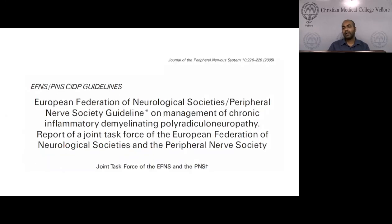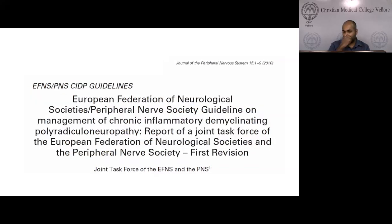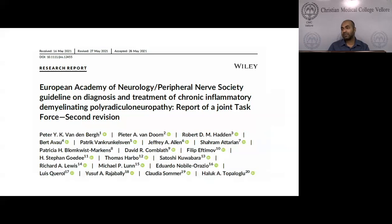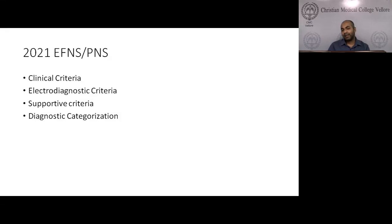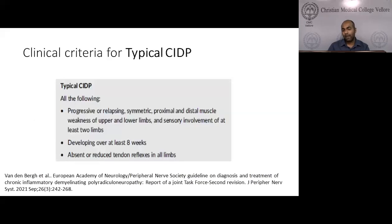An attempt to classify CIDP and create diagnostic criteria was made initially with AIN criteria, then by the EFNS (European Federation of Neurological Sciences) and Peripheral Nerve Society task force, with the first criteria in 2005. This underwent the first revision in 2010, and a second revision was published recently. In the 2021 criteria, diagnostic categorization is based on clinical criteria, electrodiagnostic criteria, and supportive criteria.